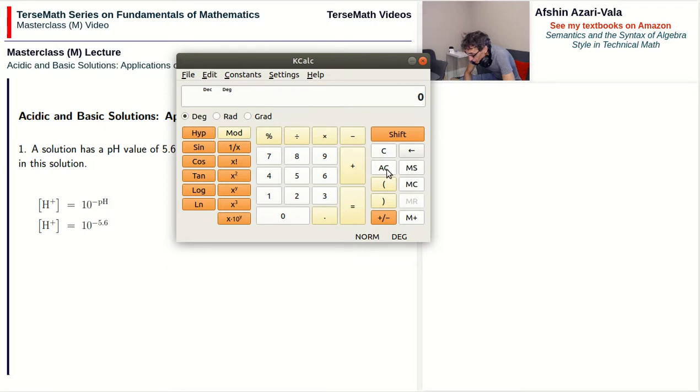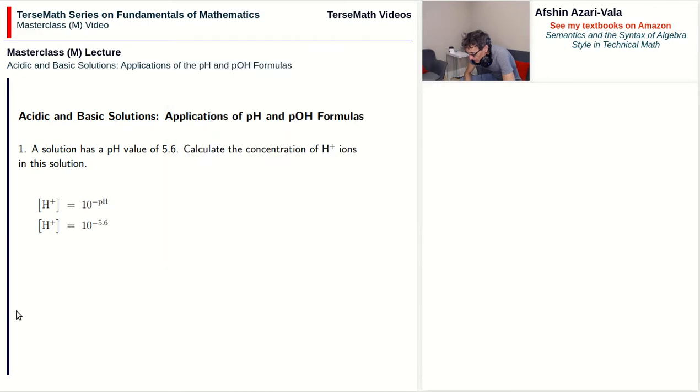Let's try that one more time: 10 to the power of 5.6 negative equals. So we end up with, in scientific notation, 2.51 times 10 to the power of negative 6 moles per liter.